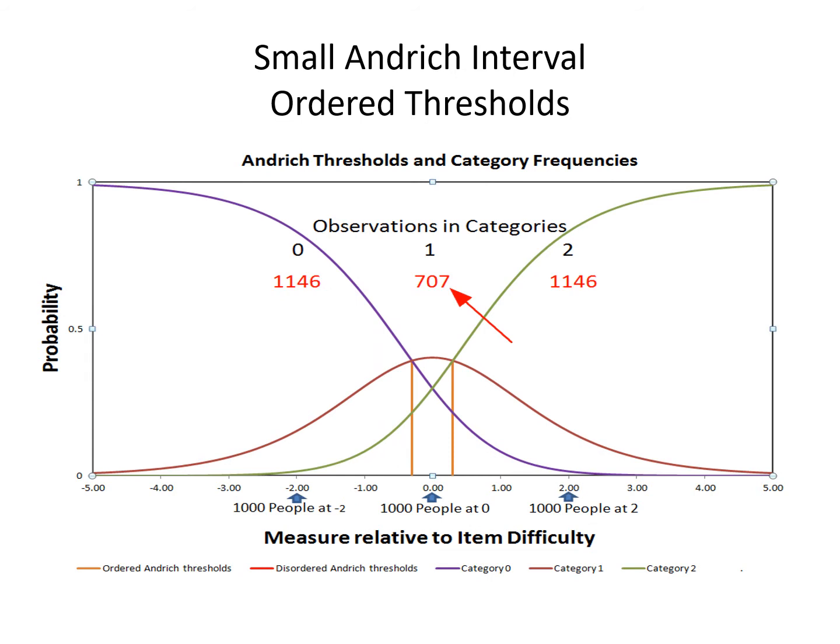Now in this picture, the Andridge thresholds have come a little closer together, and the counts of people observed in the central category have dropped. After all, the number of people hasn't changed at all, but the number of people observed to give a 1 has dropped from 1,100 to 700.